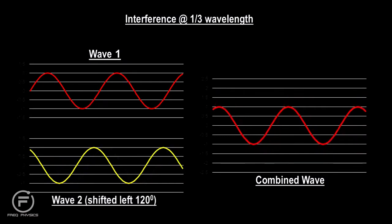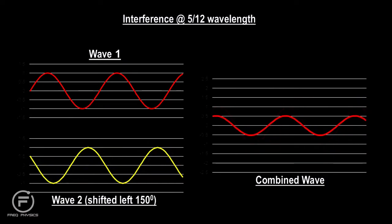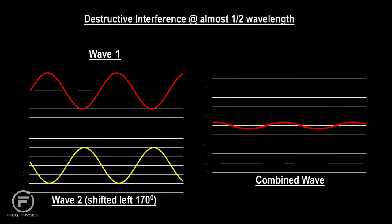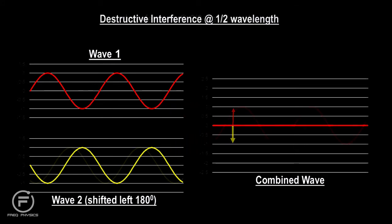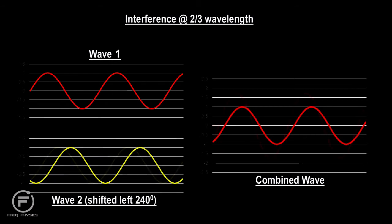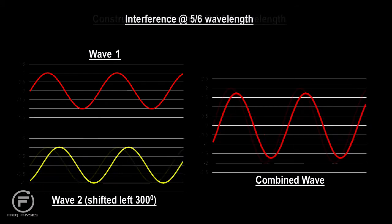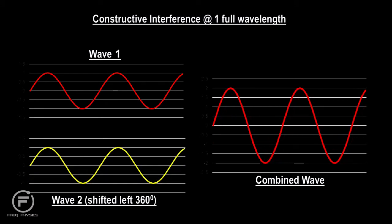As we shift one of the input waves, we see the output deviate from the maximum reinforcement. As we reach one-half of a wavelength out of sync, we get total destructive interference. The waves, in effect, cancel each other out. If we keep going, we move back into complete constructive interference as we reach one full wavelength.